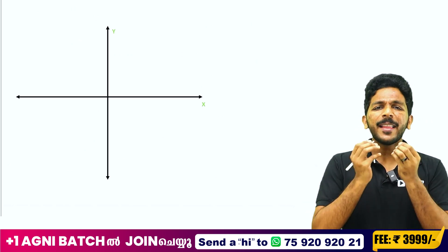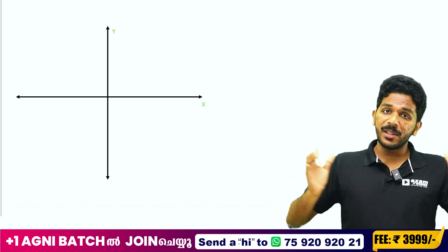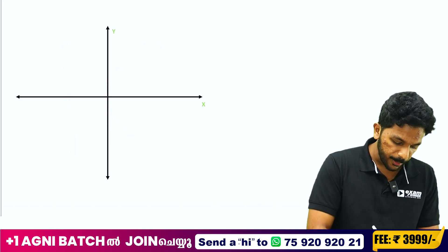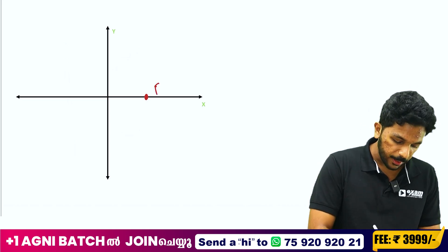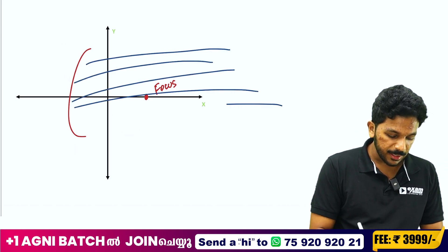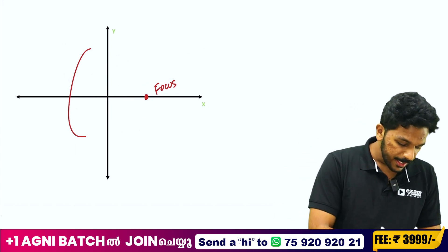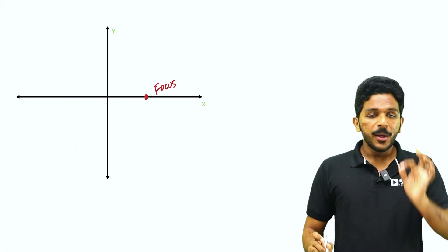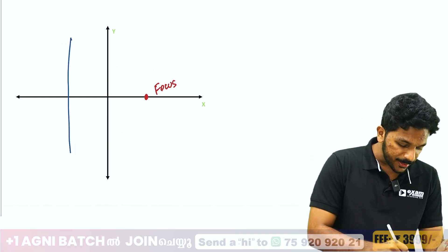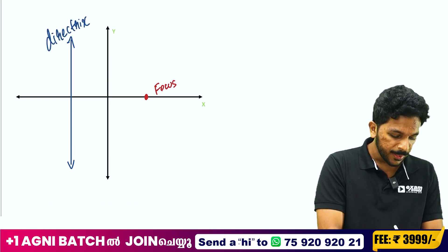What is a Parabola? Think of a Satellite Dish — that is a parabolic shape. A Parabola is defined using one point called the focus and one line called the Directrix.